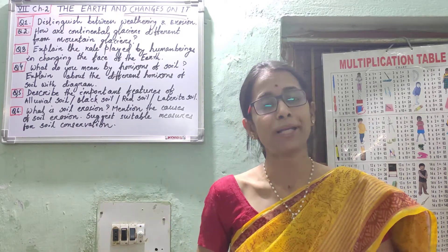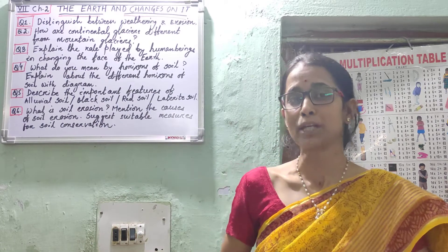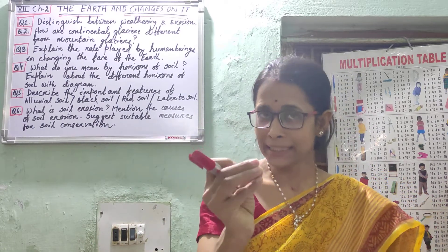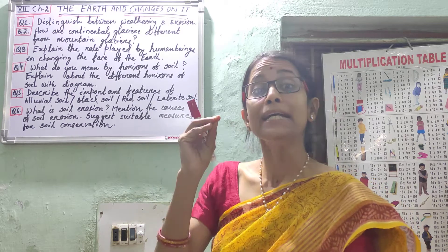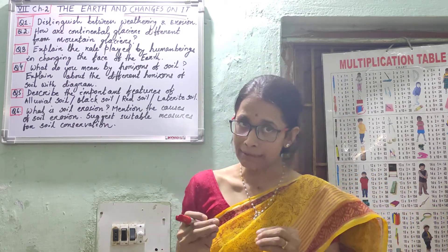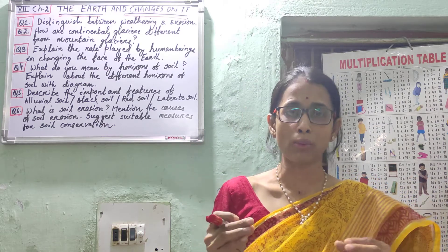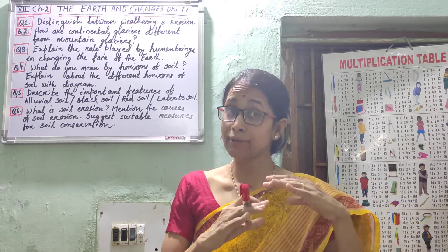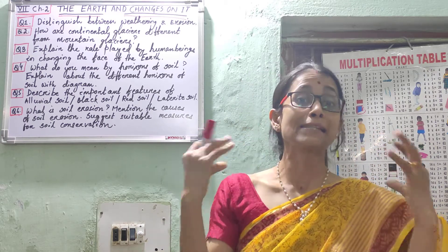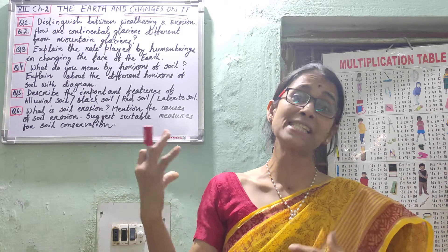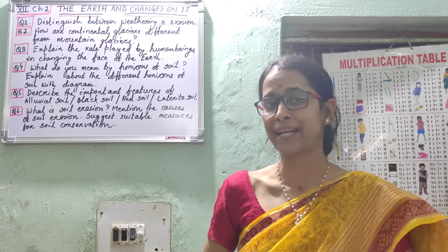For red soil — first, it is red in color because it contains iron particles. Second, it is highly porous, fine-grained, and deep. Third, it is mostly found in some parts of the peninsular plateau and in some patches over the northeastern states.